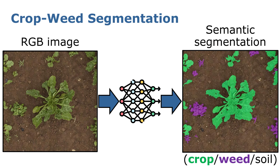We do this with a task called crop-weed semantic segmentation, where we are given as input an RGB image and we are tasked to assign every pixel in this image as either a crop, a weed, or a background pixel. Here we demark crops as green and weeds as purple.